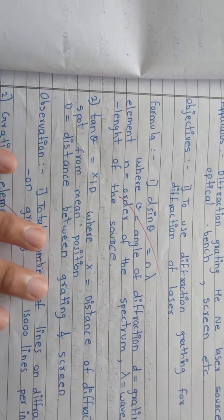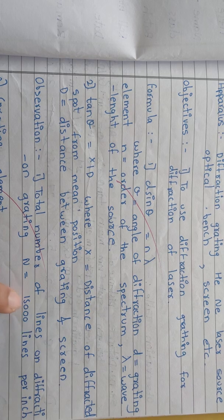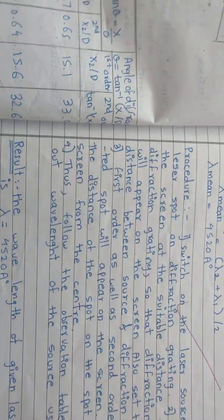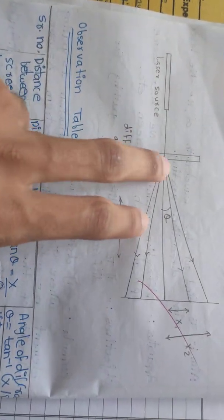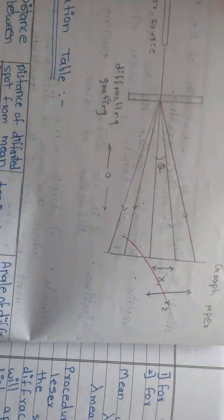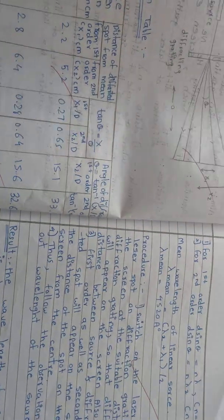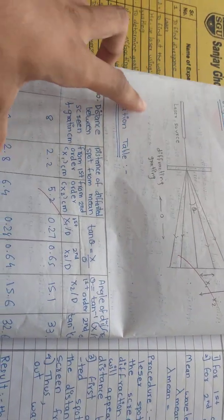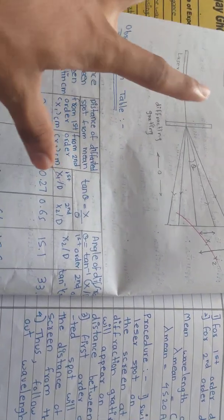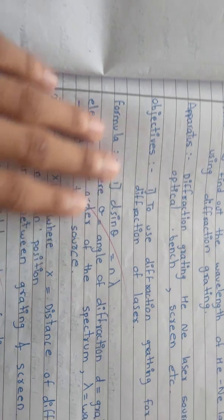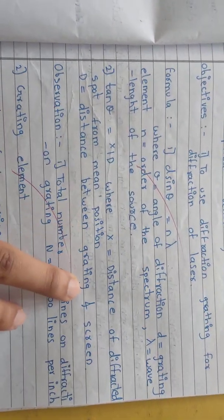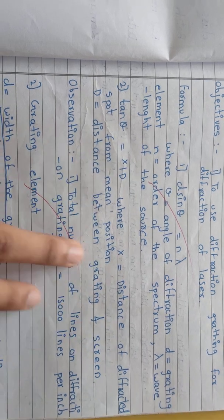Tan theta equals x over D, where x is diffraction of grating spot from main position. So diffraction from this main position, and capital D is always the distance between the grating and the screen.